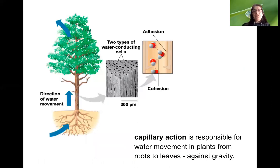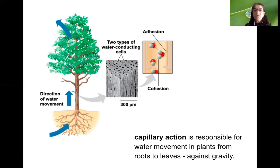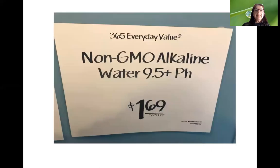Capillary action: if you insert a straw in a drink, you'll see the liquid climb up the straw against gravity. In a narrow tube, water molecules bind to each other and also to the surface of the tube, essentially climbing up against gravity. This property is very important because it is how vascular plants get water all the way from their roots to the top of the plant — especially in tall trees. Plants have tiny tubes, similar to our blood vessels, that transport water throughout the whole plant using capillary action. Without capillary action, plants wouldn't be able to thrive. And this is the end of our video.